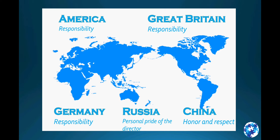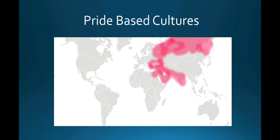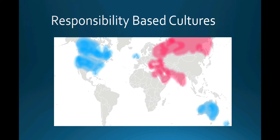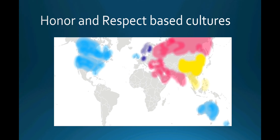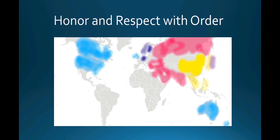When you look at the world, basically there are pride-based cultures, there are responsibility-based cultures, there are responsibility and order-based cultures, honor and respect-based cultures, and there's honor and respect with order on top of that.